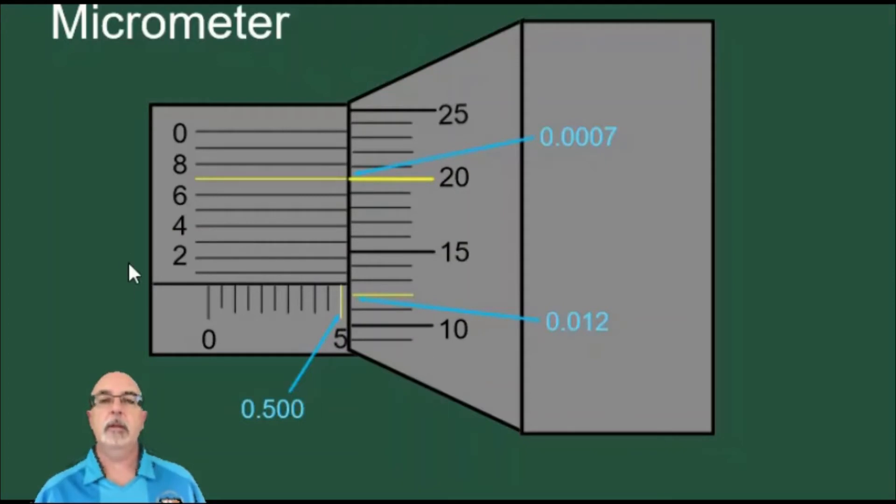The final scale we use is the Vernier scale. It is here on the top left. We see 2, 4, 6, 8, and 0. We use this part last.